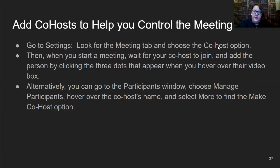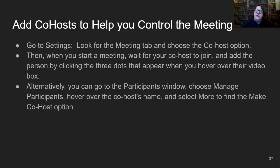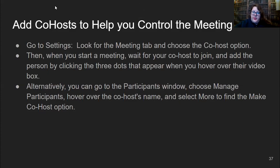I recommend adding a co-host to help you control the meeting. Make sure you have two people on the call as hosts — one person is the facilitator talking to people, and the second person is backup, helping mute people, helping people unmute themselves, and helping with audio or video issues. To add a co-host, wait for them to join, click manage participants, click on the three dots next to their name, and select make them a co-host.